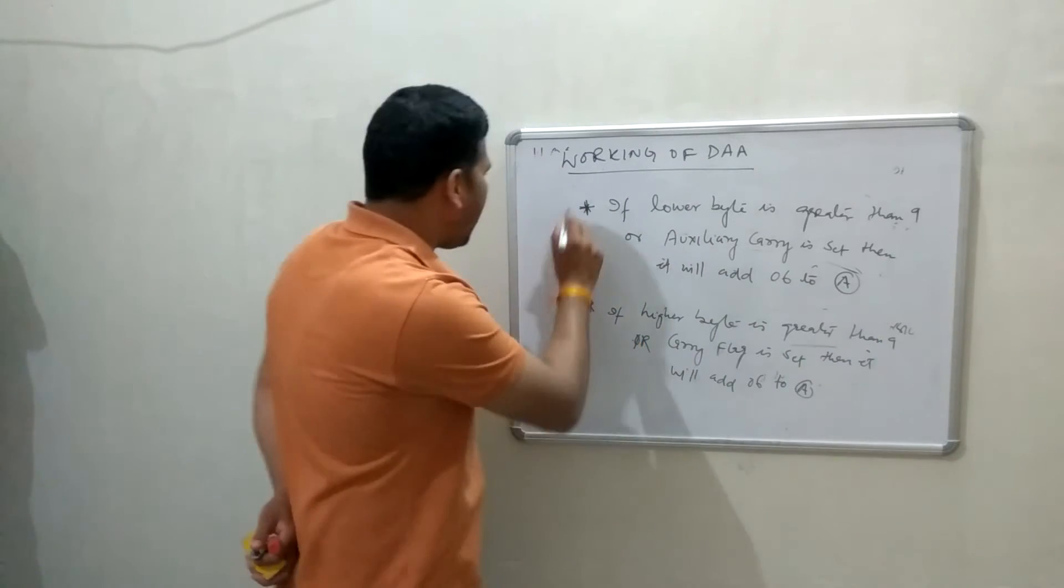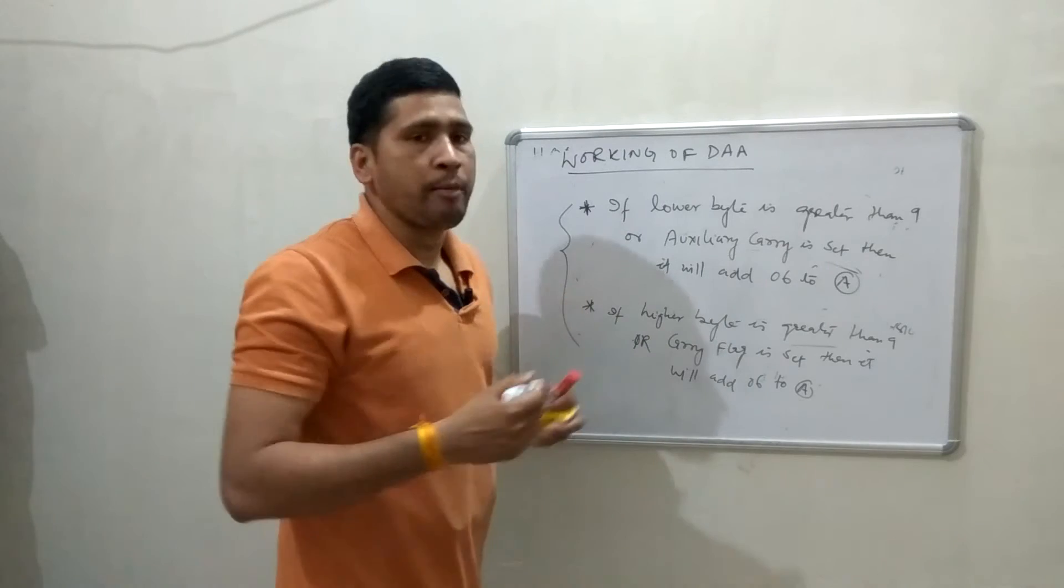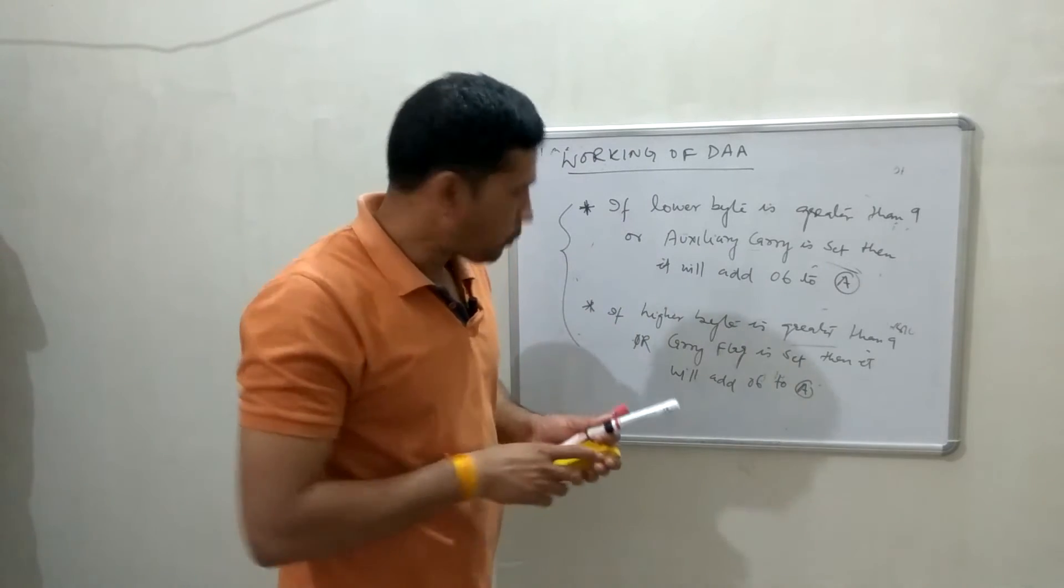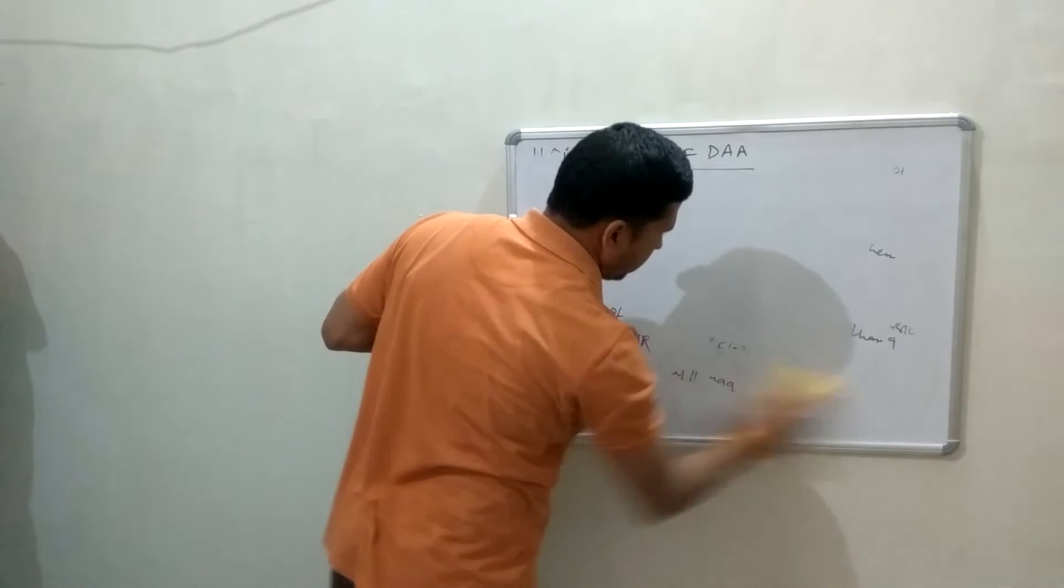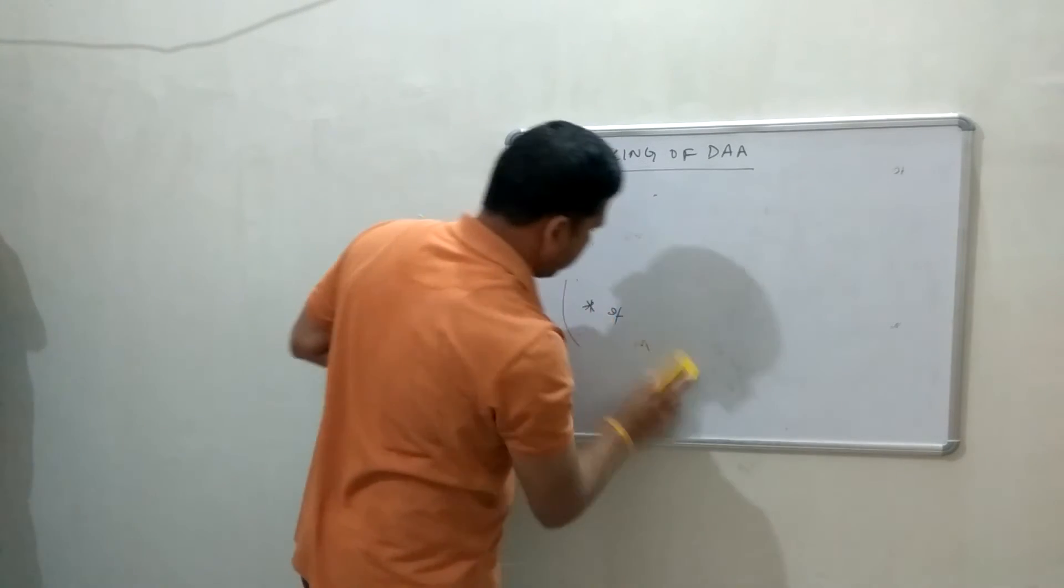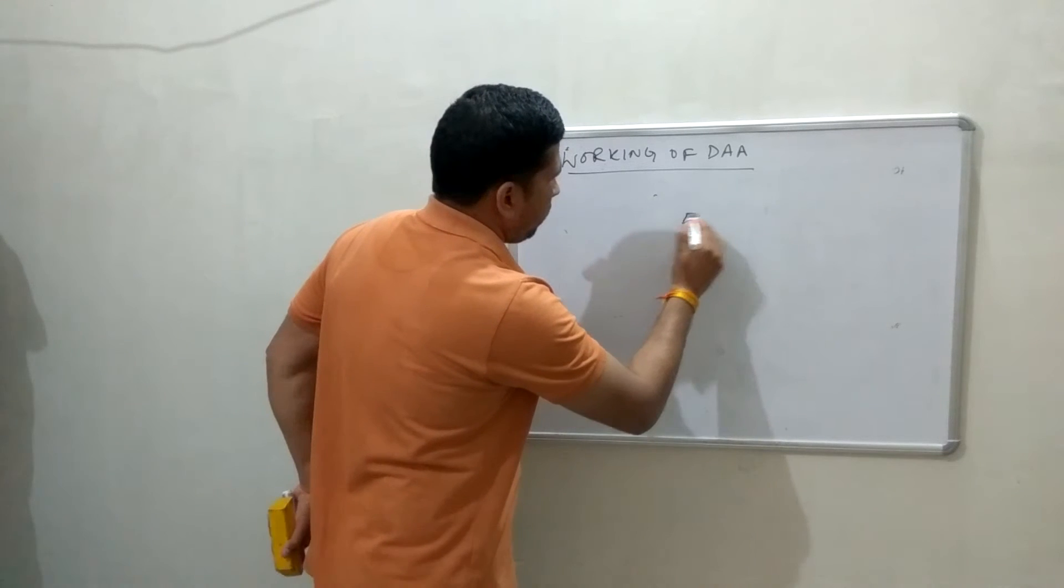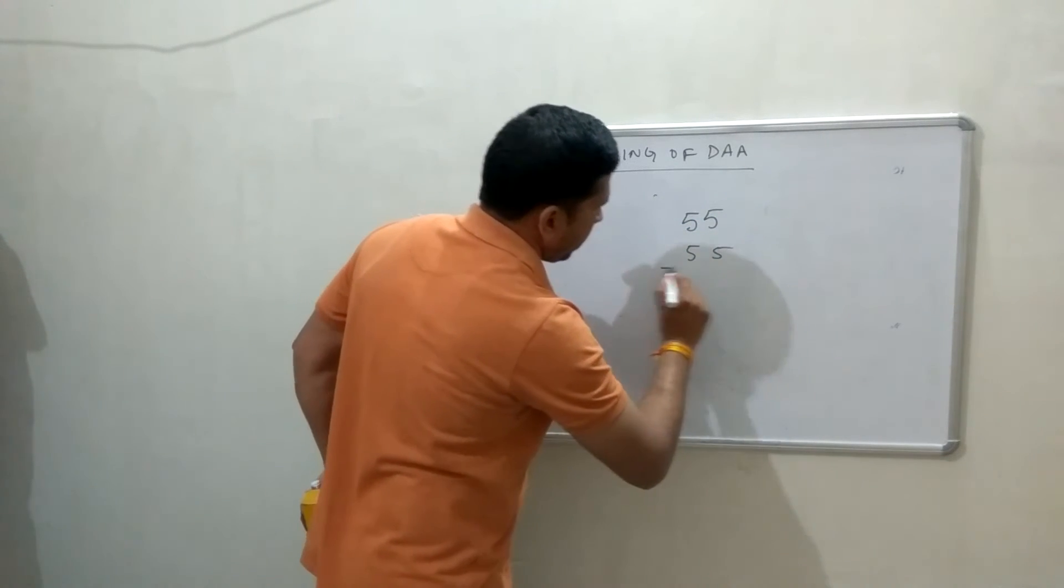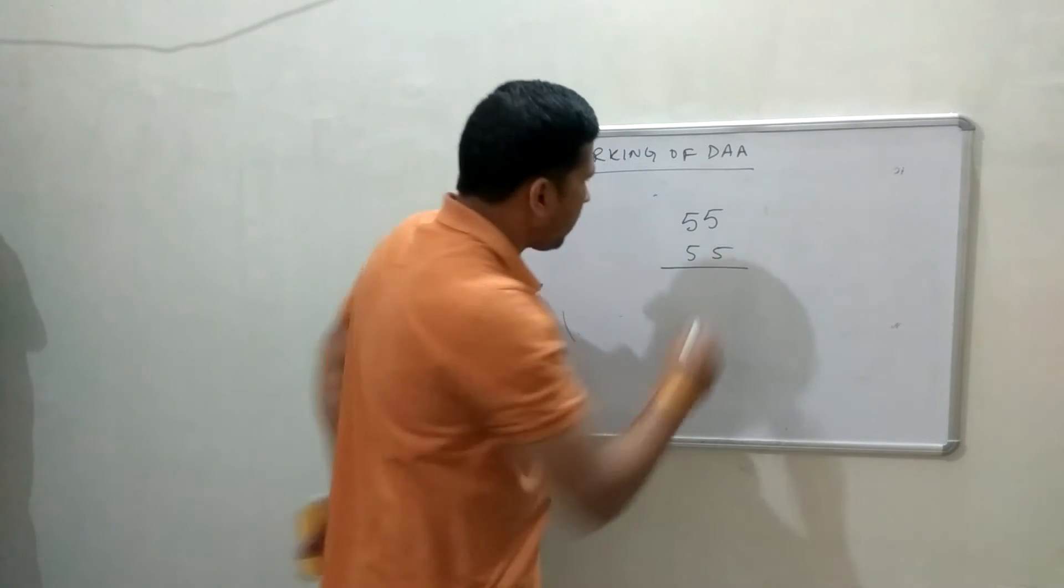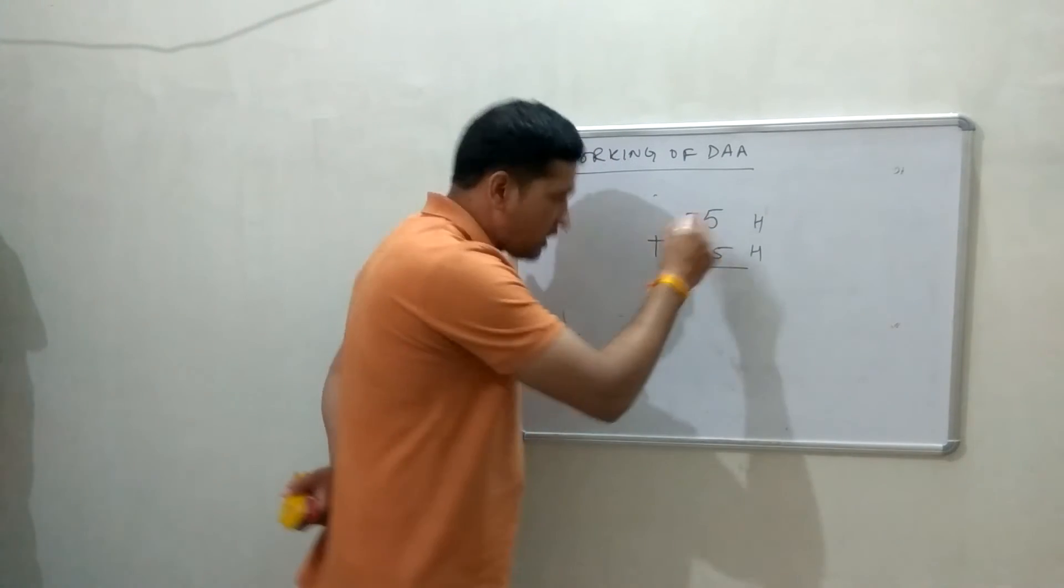Now, let me verify and let me explain by taking an example of two numbers. Addition of two numbers. Now, suppose, this is first hexadecimal number, this is second hexadecimal number. Now, we are going to add. Suppose, I am going to add these two numbers.